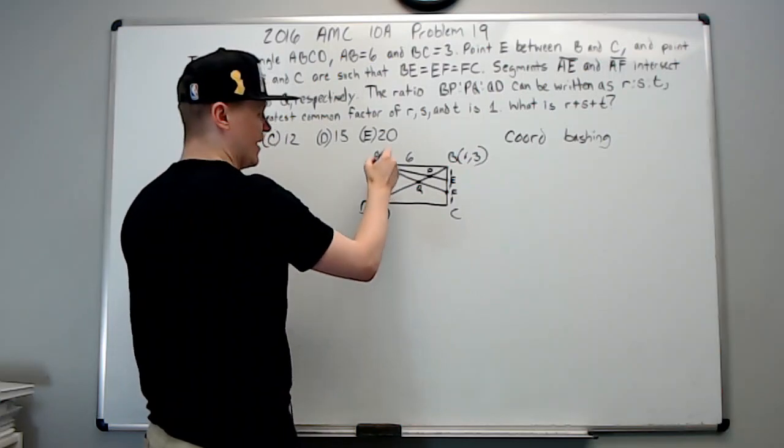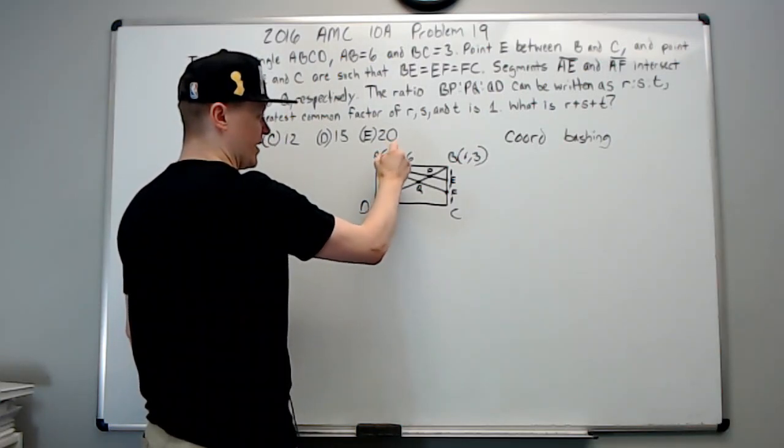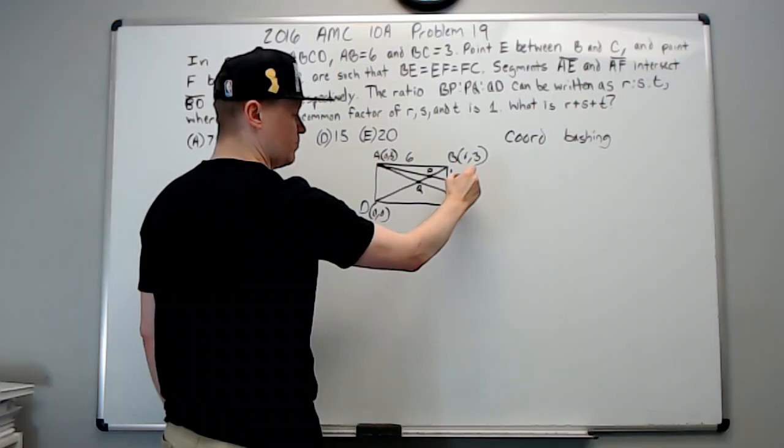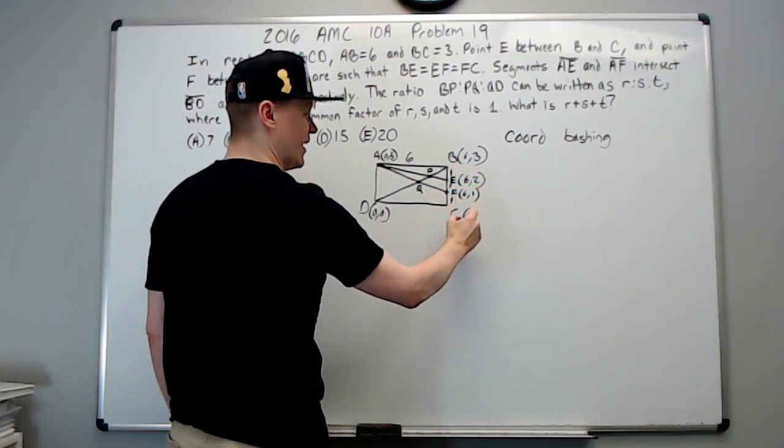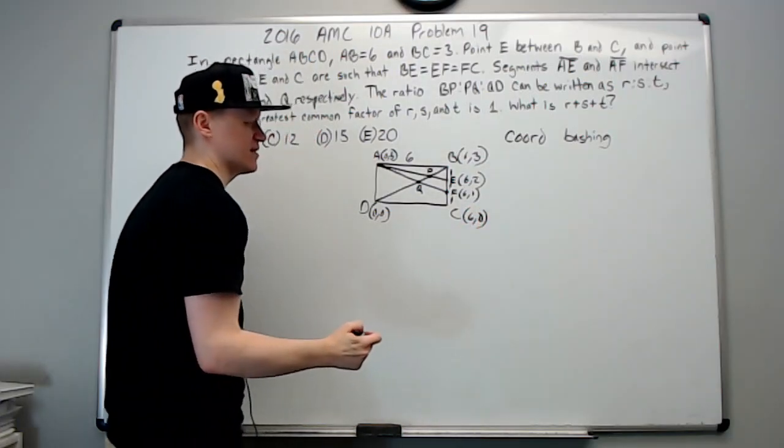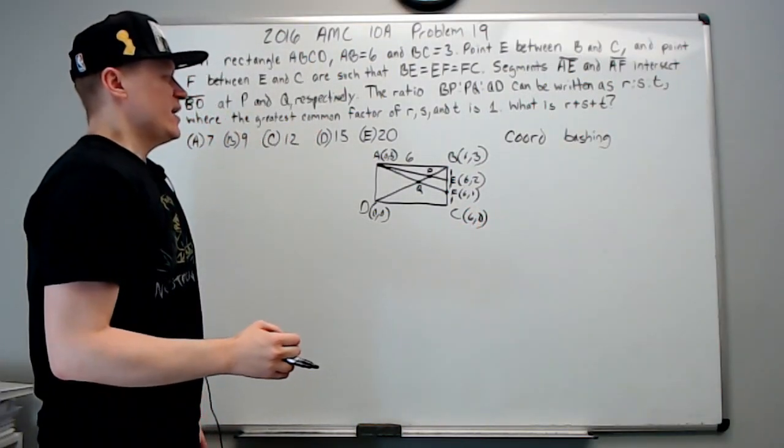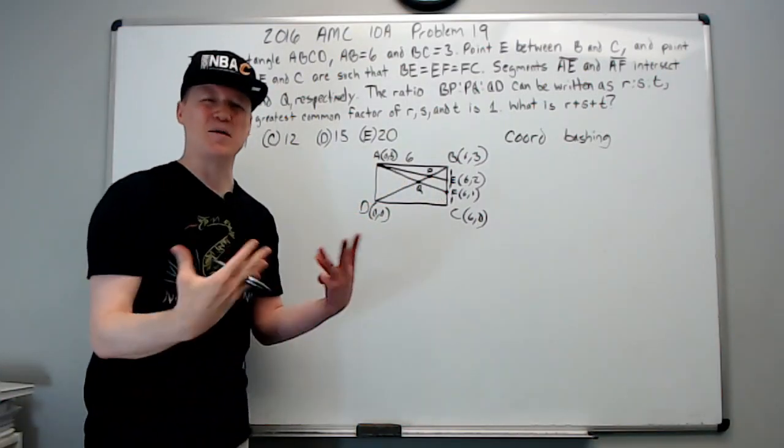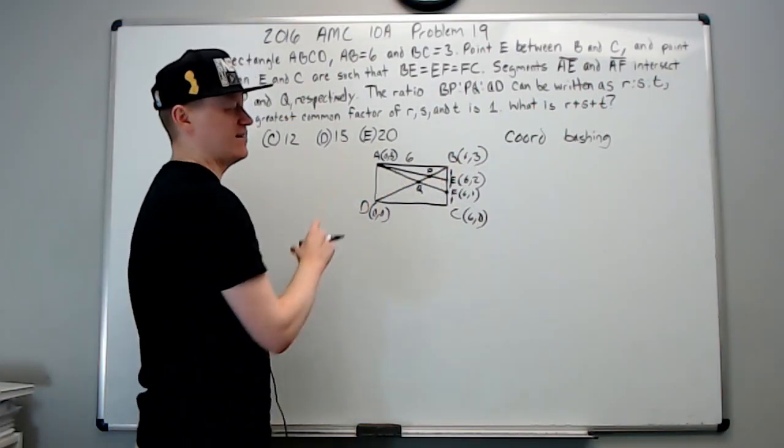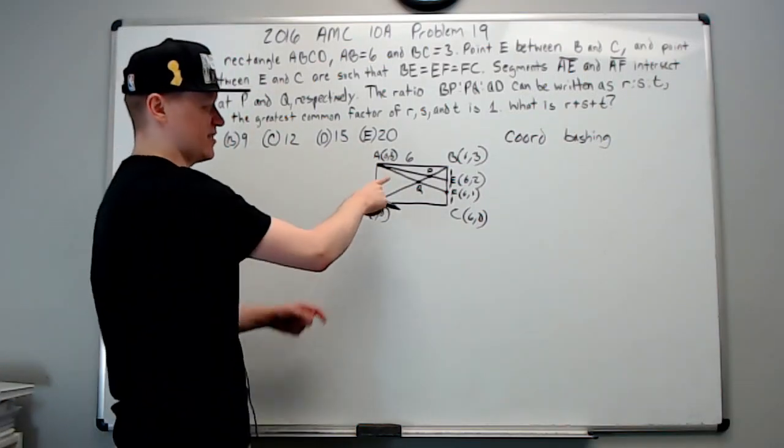And since this is six and this is three, B would be six three, A would be zero three. Since you go down one from B, E would be the point six two, F the point six one, and C the point six zero. If you do so, you can find these points of intersection and then apply distance formula to find these distances.